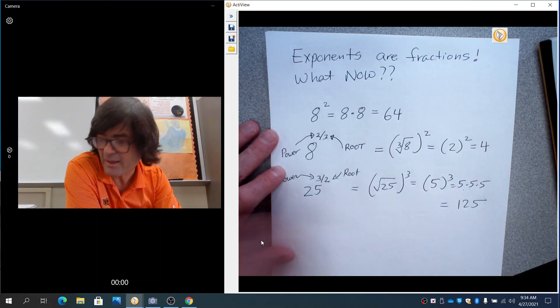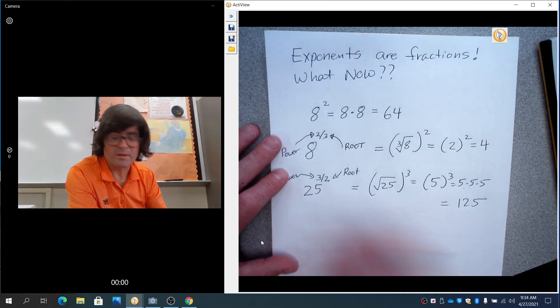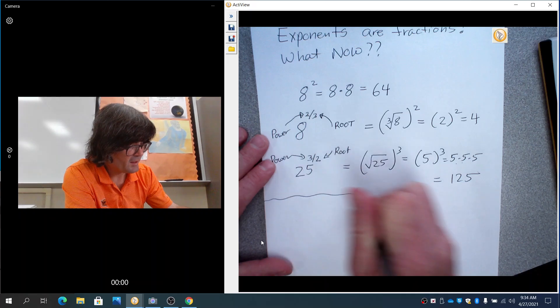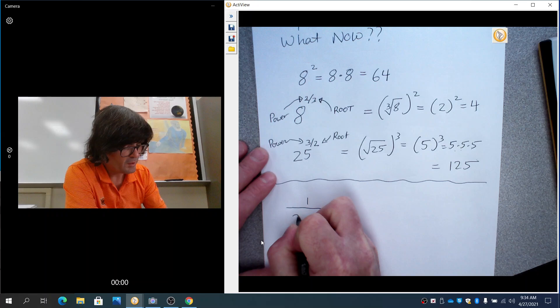So 25 to the 3 halves makes 125. Hopefully that kind of helps clean things up here. What if you have this?